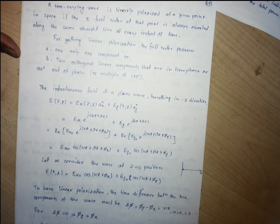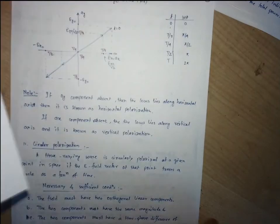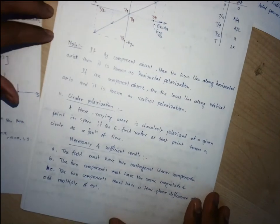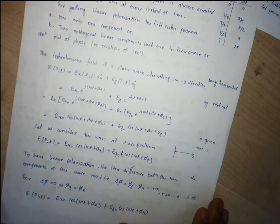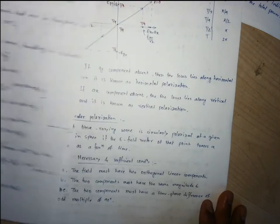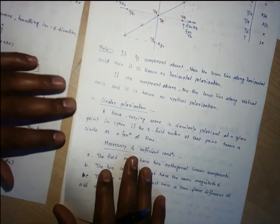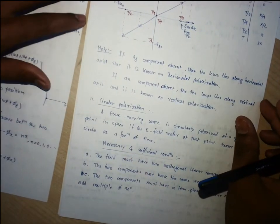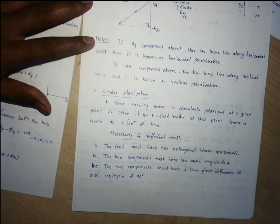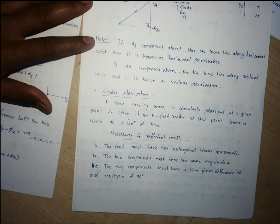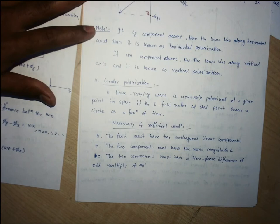For circular polarization, there must be two orthogonal components of the electric field, and the condition is that they should have the same magnitude with a phase difference that is an odd multiple of 90 degrees. For elliptical polarization, the magnitude of the two orthogonal components should be different — that is, the axial ratio should not be one.